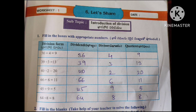Question 13, third one: Dividend 40, Divisor 2. Question 20: 66 divided by 6 equals 11.